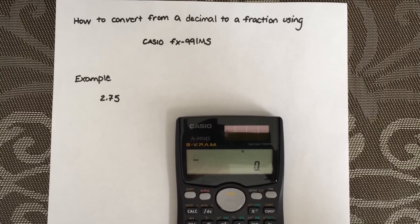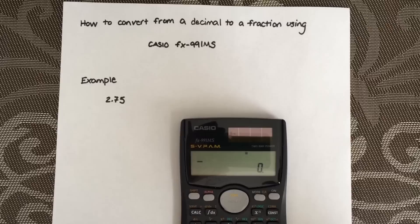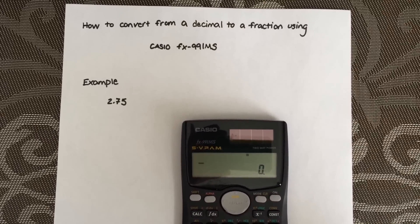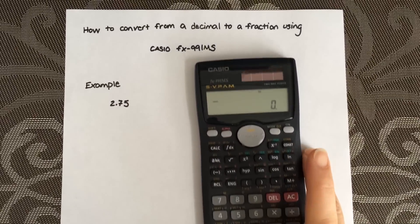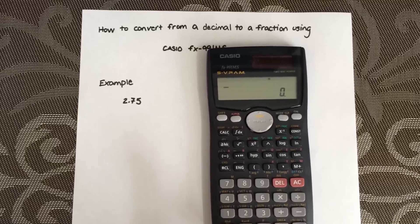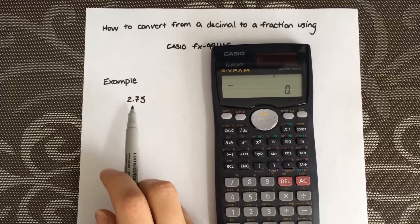How to convert from a decimal to a fraction using the Casio FX991MS. The example I'm going to show you is 2.75.